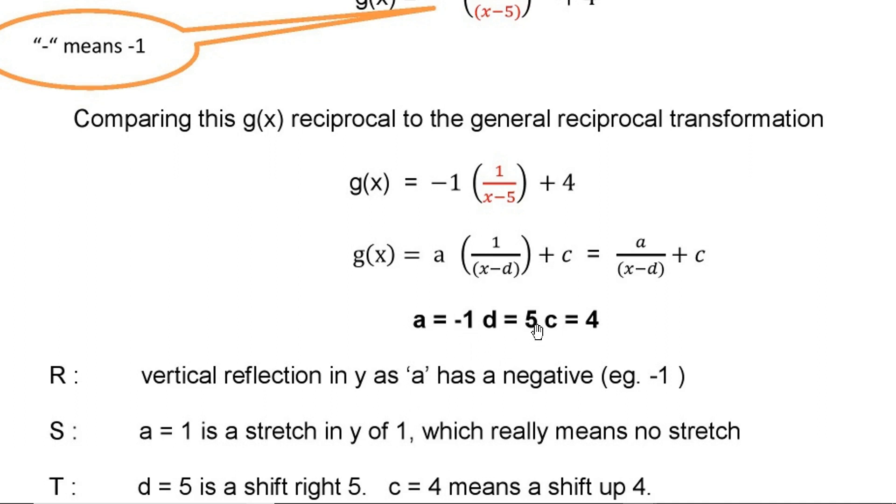d is 5, that means you are shifting it to right. And 4, c equal to 4 means you are shifting up by 4.